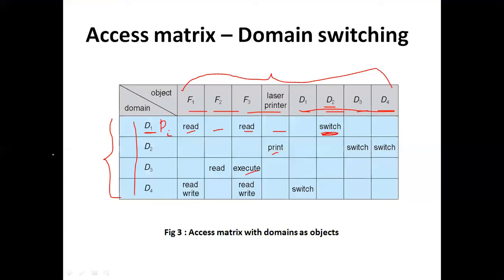If a process is running in domain d2, it can access the printer and can switch to domain d3 and domain d4. If a process is executing in domain d3, it can read file f2 and execute file f3. If a process is executing in domain d4, it can read and write f1, read and write f3, and it can switch to domain d1.